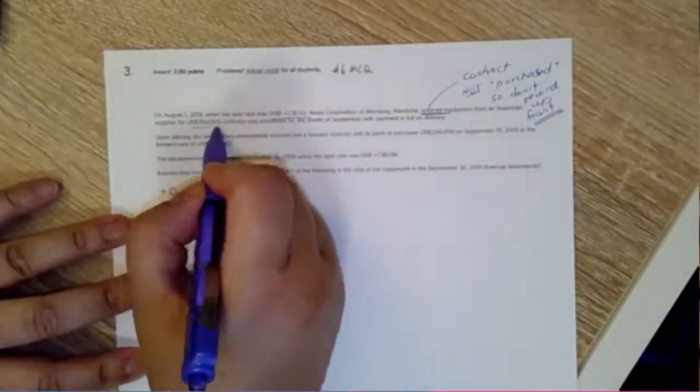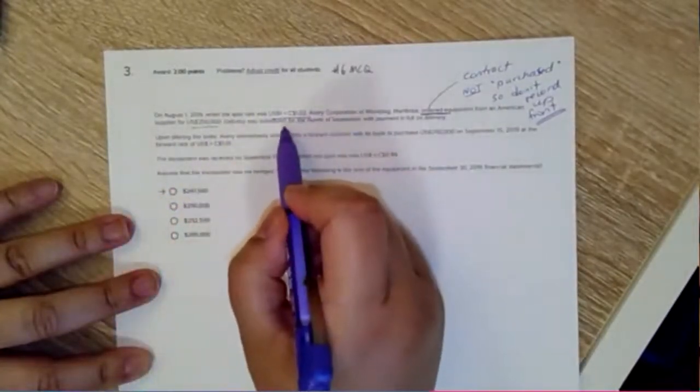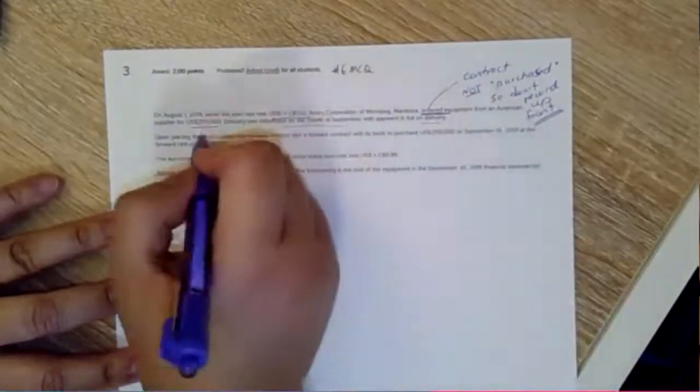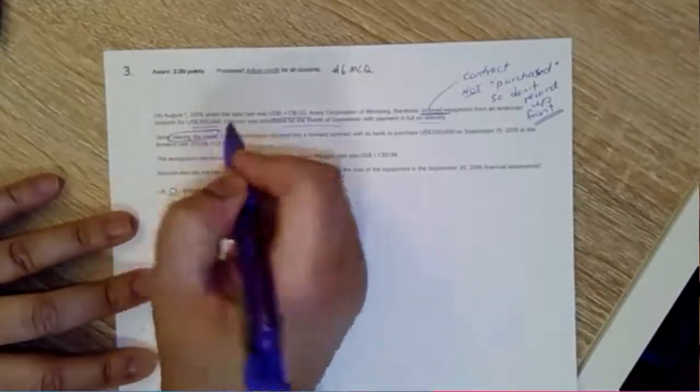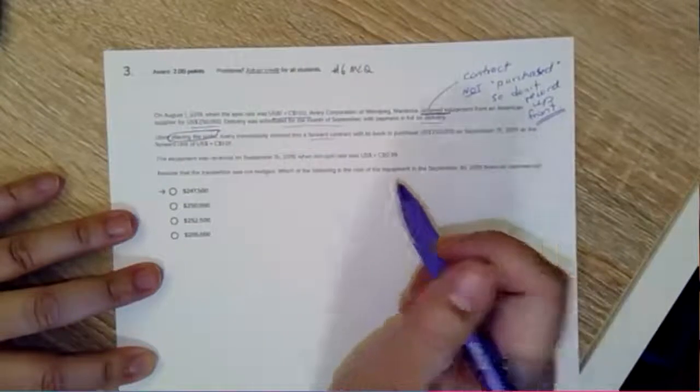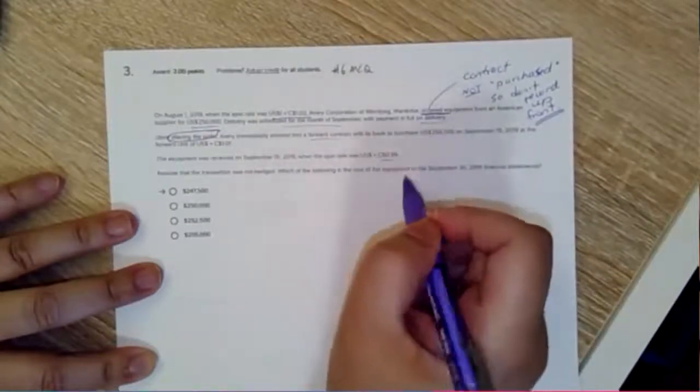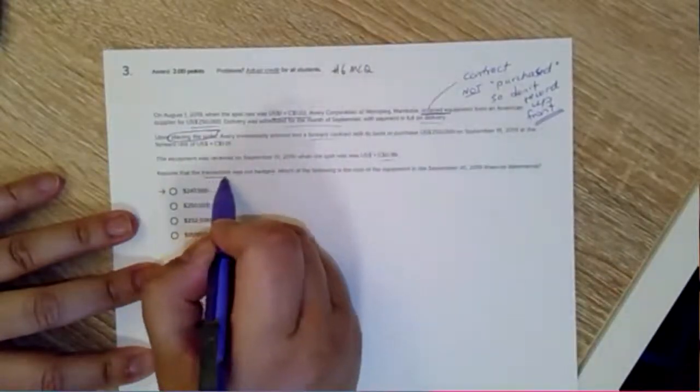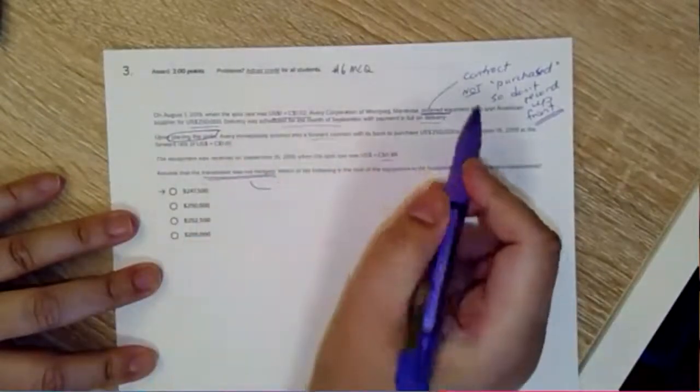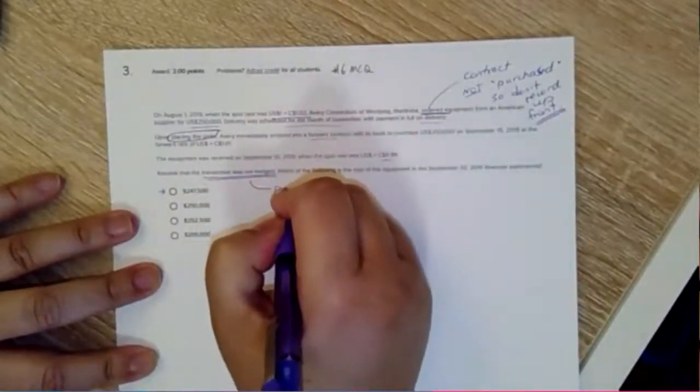USD $250k, delivery was scheduled for the month of September, payment in full and delivery. Notice again placing the order, not making the purchase. They entered into forward contract with its bank. Equipment was received, spot rate was this. Assume the transaction was not hedged, so all we're dealing with is the purchase order.